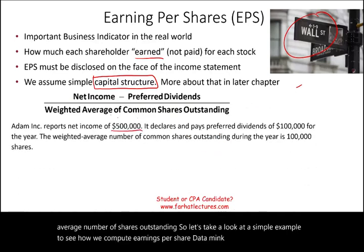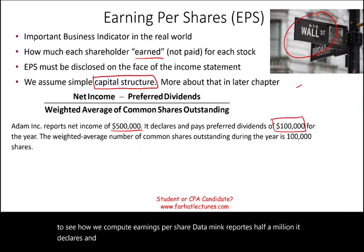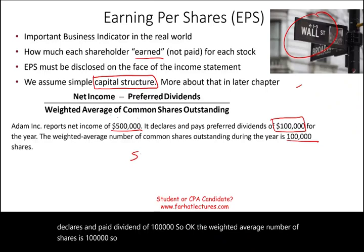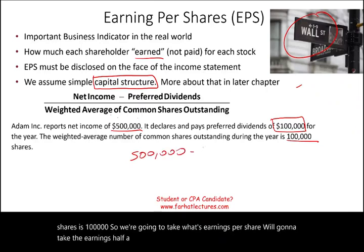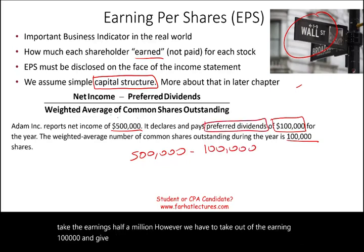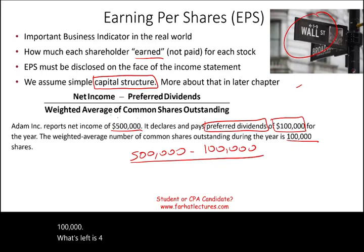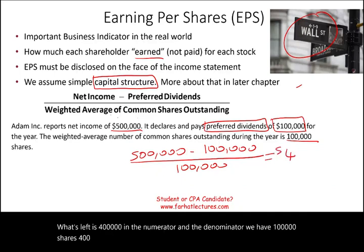Let's look at a simple example. Adam Inc. reports $500,000 in net income and declares and pays preferred dividends of $100,000. The weighted average number of shares outstanding is 100,000. So we take earnings of $500,000, deduct the $100,000 preferred dividend, leaving $400,000 in the numerator. Dividing $400,000 by 100,000 shares gives earnings per share of $4 per share.